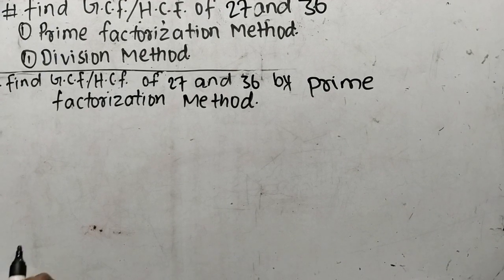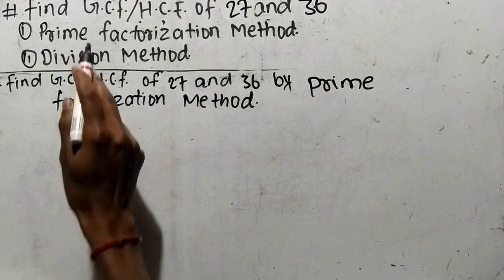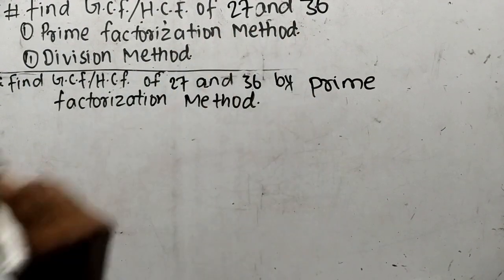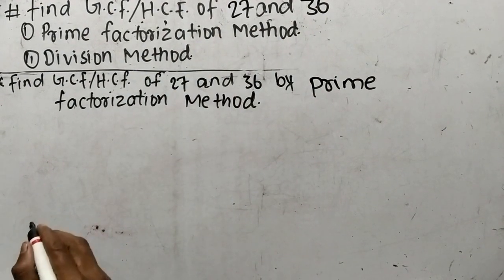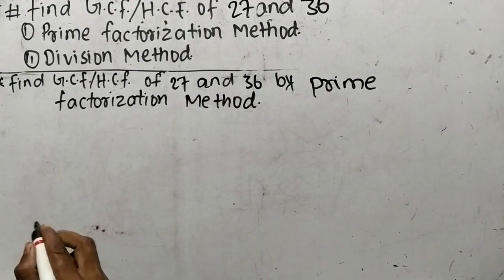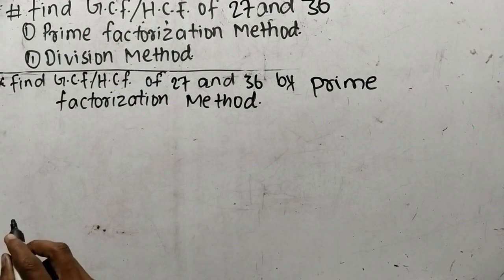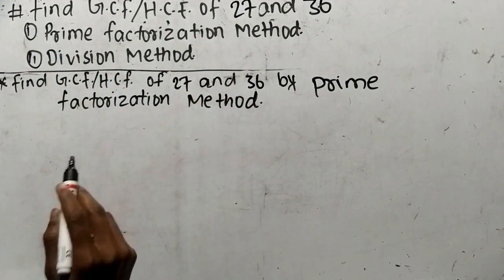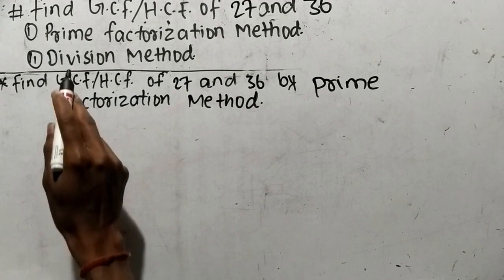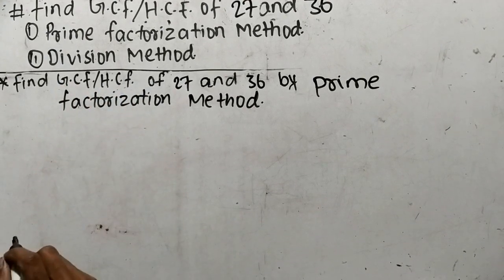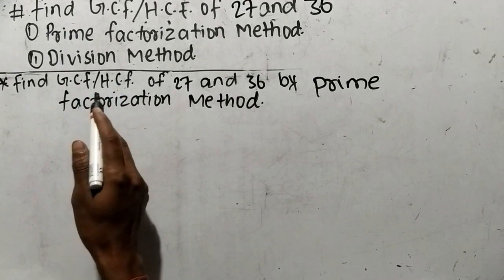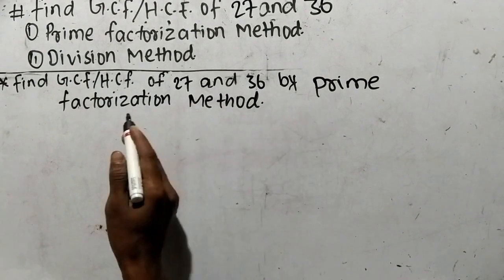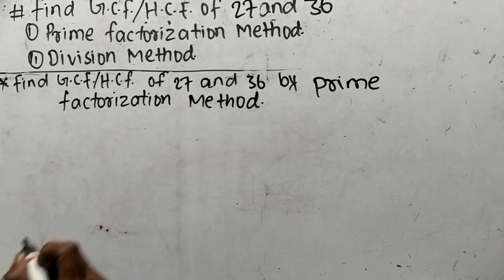Today in this video we shall learn to find the GCF or HCF of 27 and 36. We shall find the GCF or HCF by two methods: first by prime factorization method, and second by division method. So let's find out the GCF or HCF of 27 and 36 by prime factorization method.